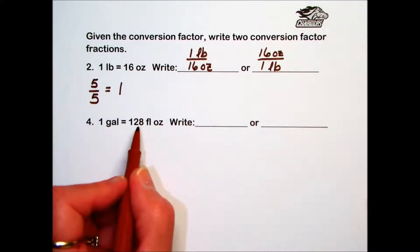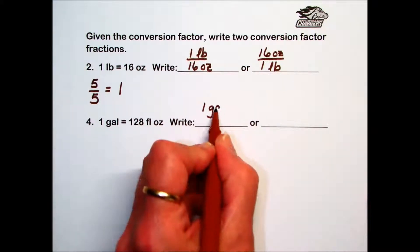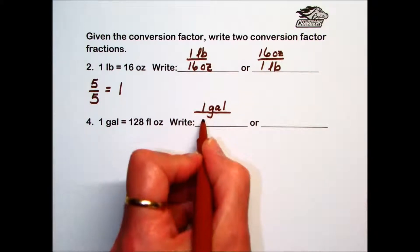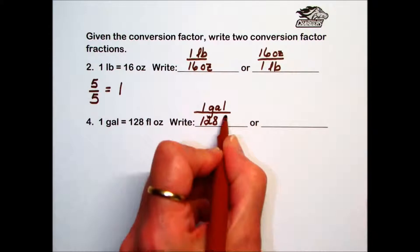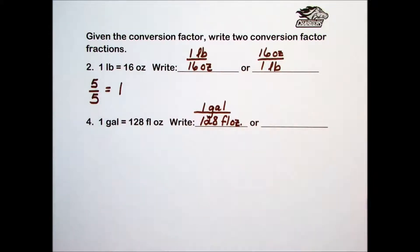Again, there's no hard, fast rule what will go in the numerator, which one of those facts. So if I start with 1 gallon in the numerator over 128 fluid ounces in the denominator, that's giving me a conversion factor fraction.